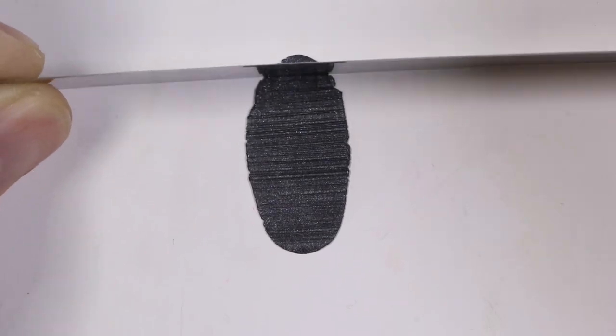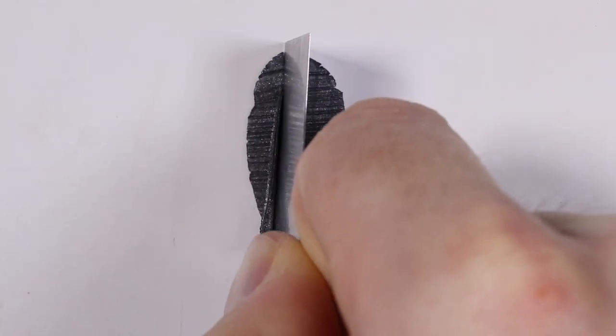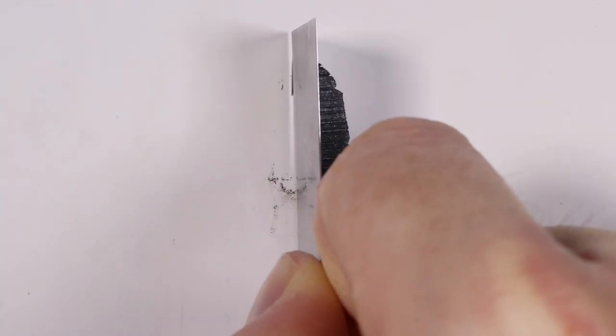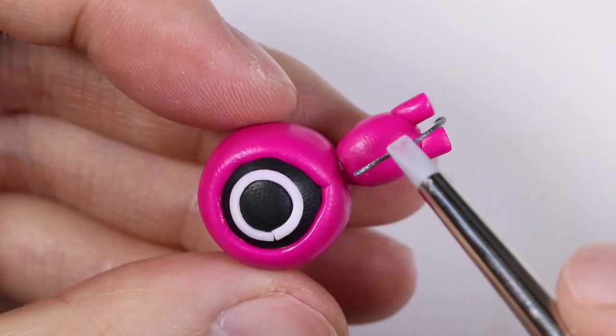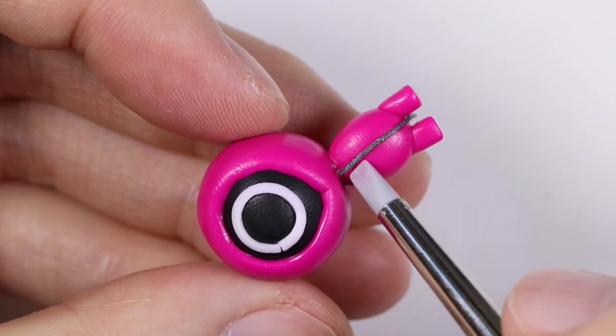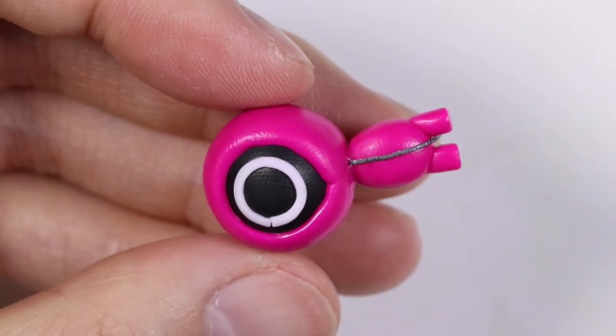This will be for the zipper. And all we have to do is cut out a very thin strip of clay. We're going to place that strip in the middle of our body and cut off the excess almost towards the end of the body.